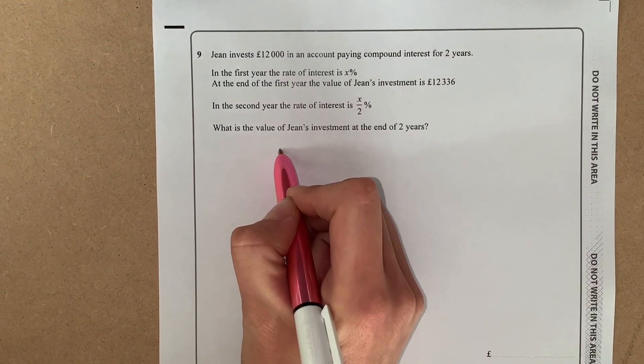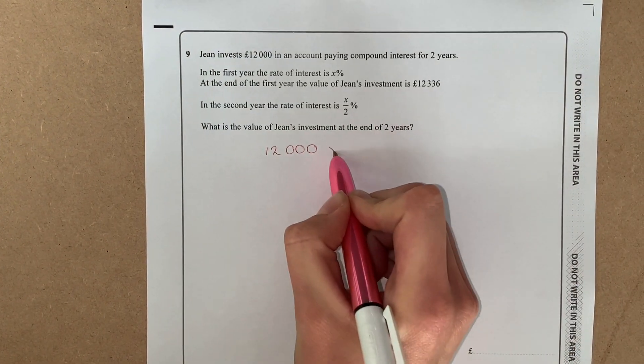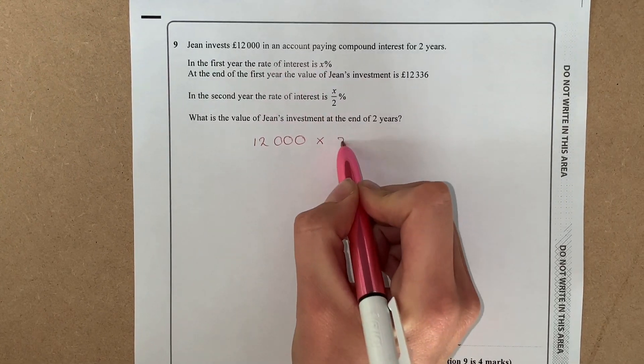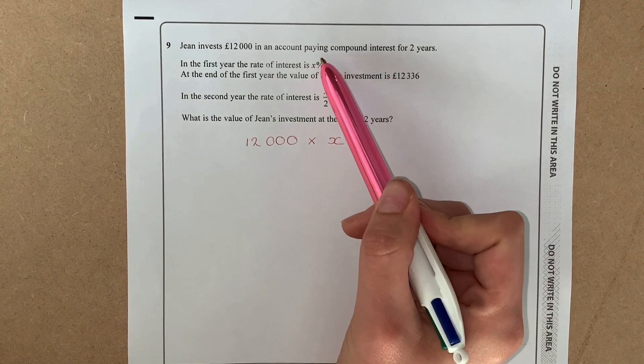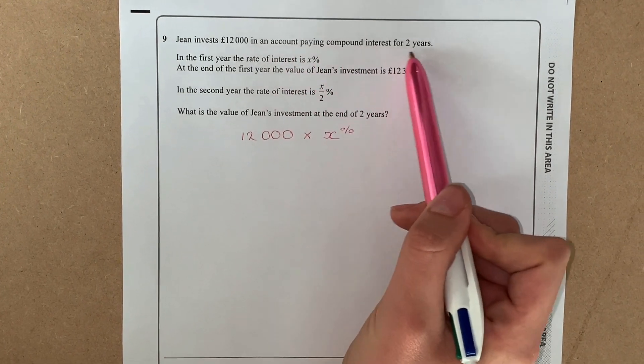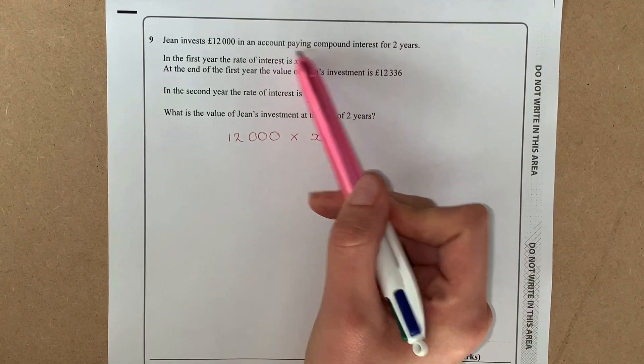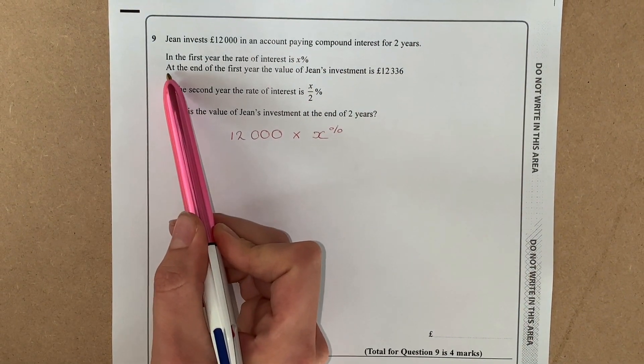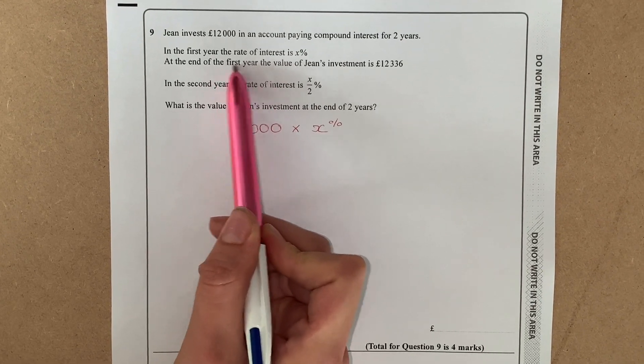So we're not sure what that interest rate is yet. Now some people here would put a power of two, but although it says that we're paying compound interest for two years, if we read on, actually this part we're just looking at the first year at the moment, so we don't need a power of two.